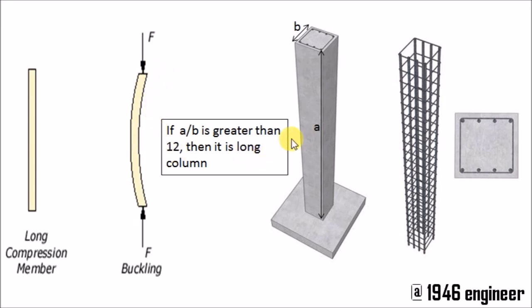So first of all, what is a long column? See, this is the height of the column and this is the lateral dimension or width of the column. If the ratio of A by B is greater than 12, then it is considered as a long column.